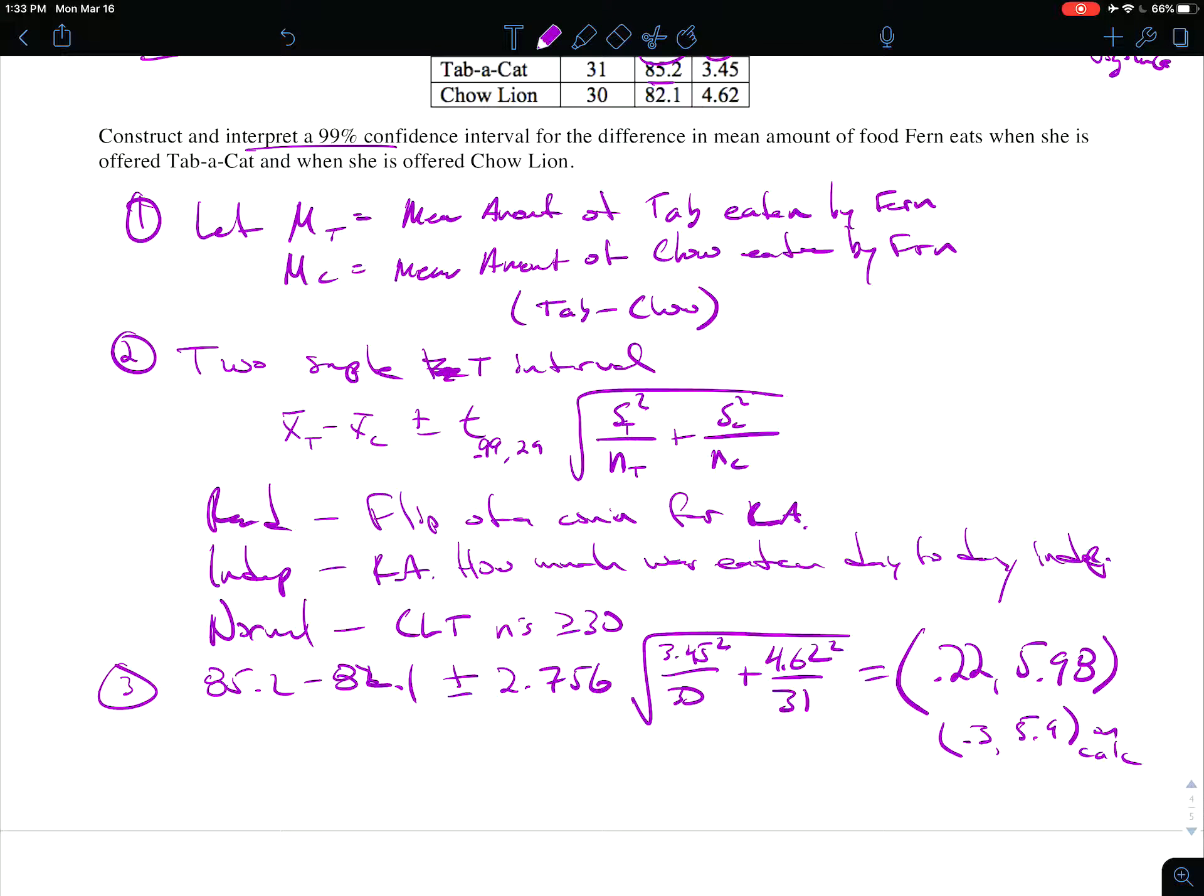In any case, we're ready for the phrase that pays. All right, we are 99% confident the true mean difference in mean amount of food eaten, and again it was T minus C, is between 0.22 and 5.98.